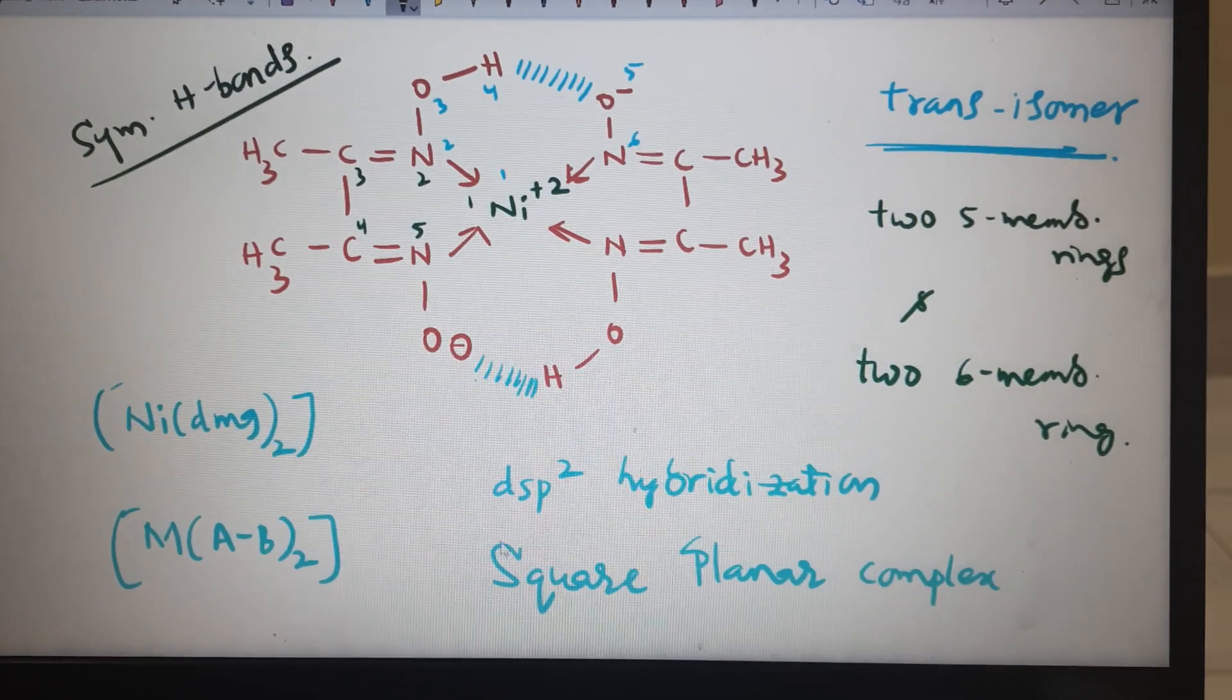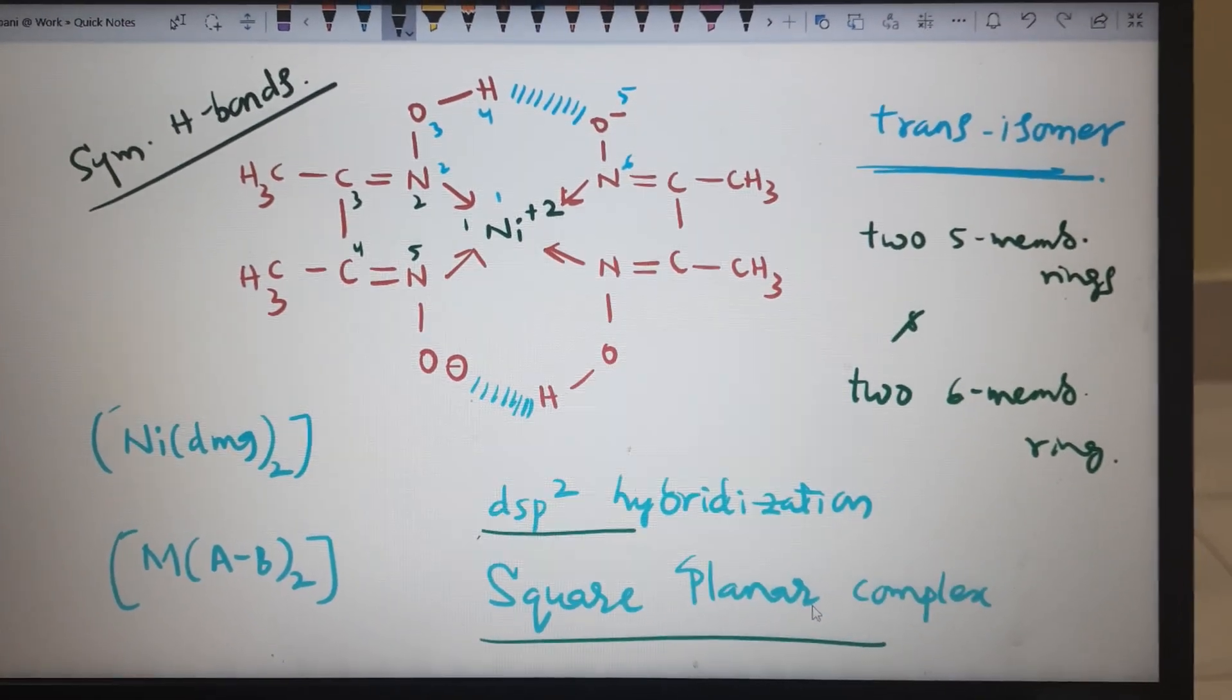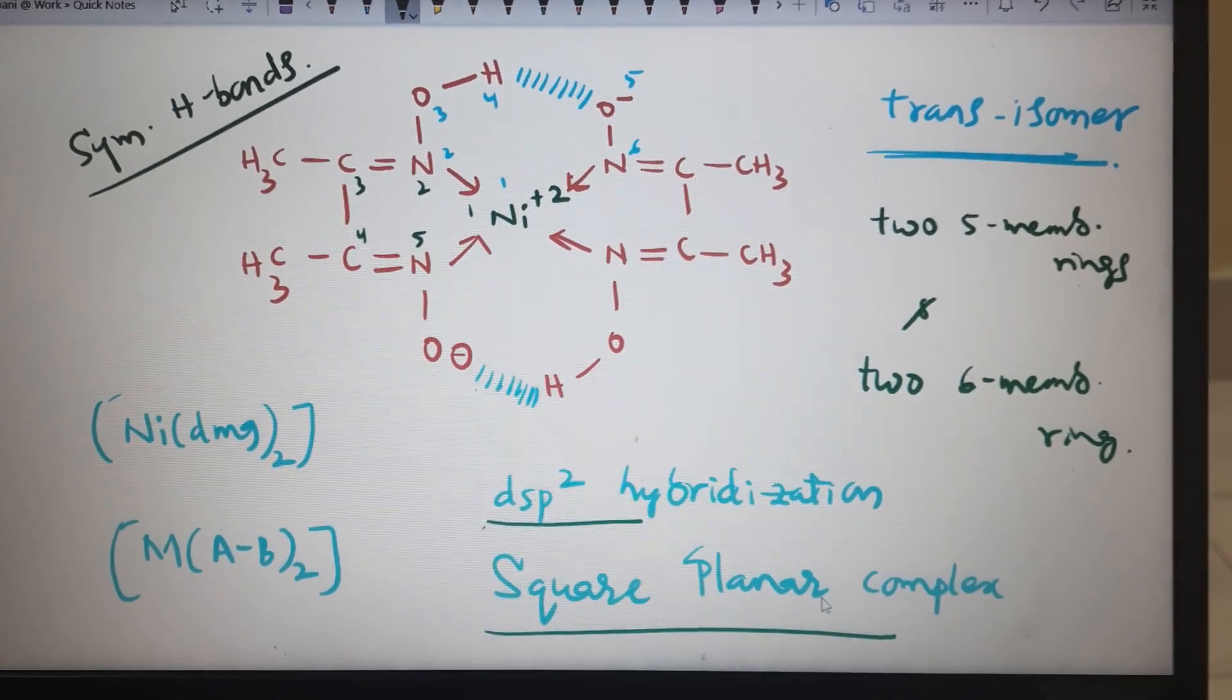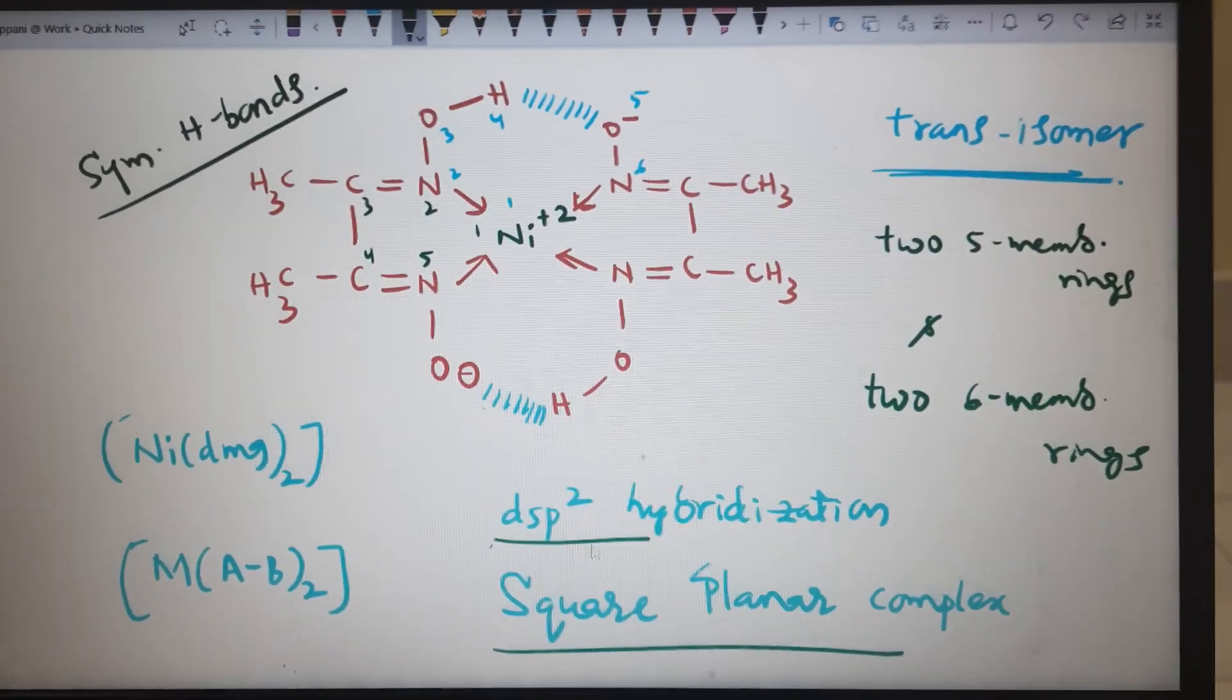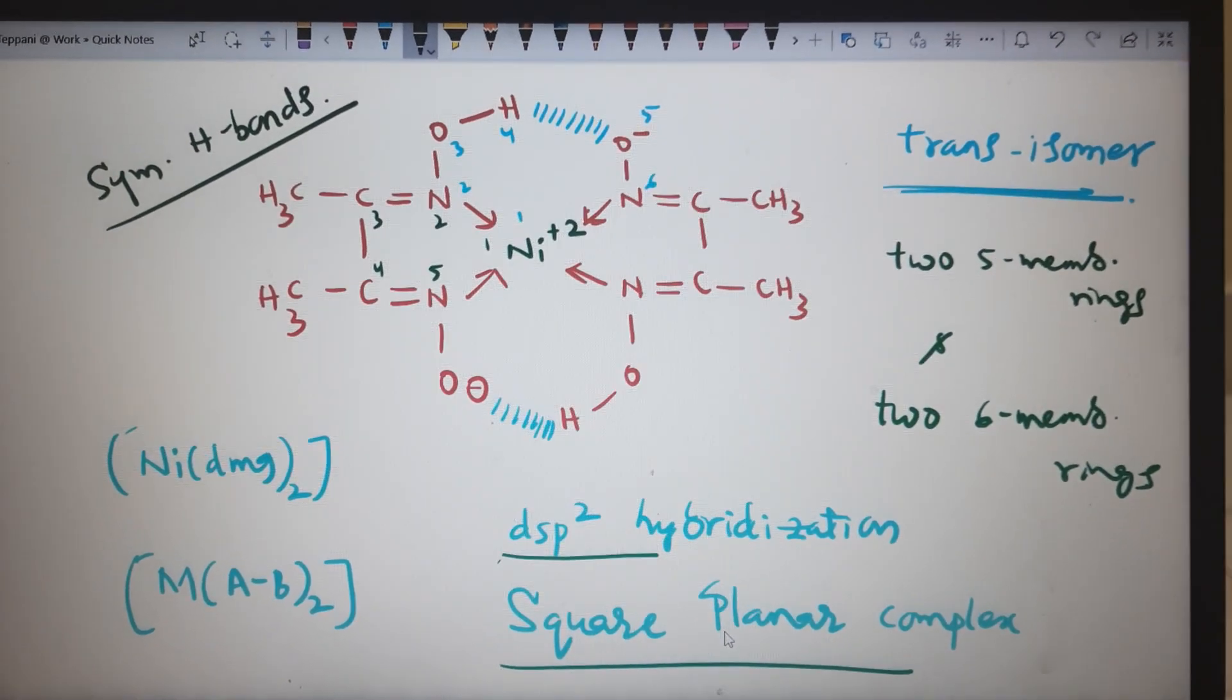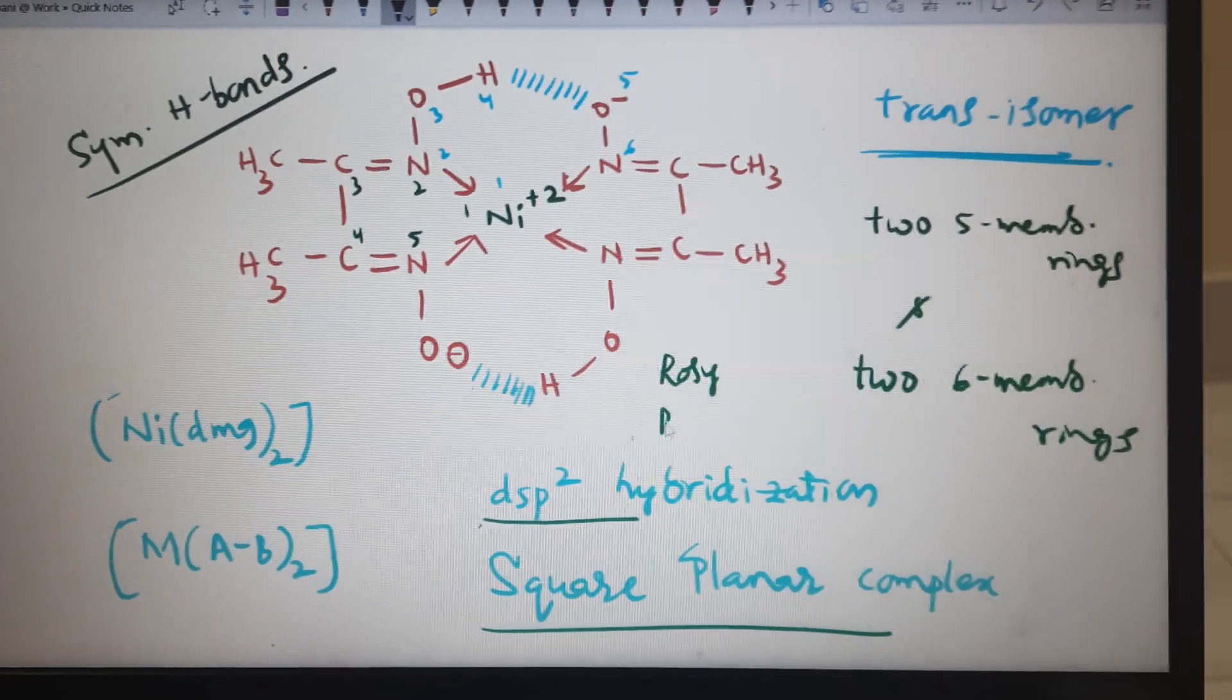These are the things about nickel DMG complex: trans isomer, two five-membered and two six-membered rings, dsp2 hybridization, square planar, and it is rosy red or red color complex.